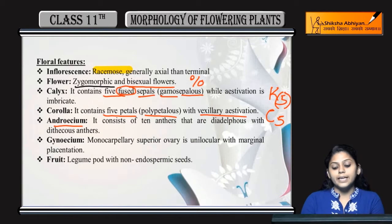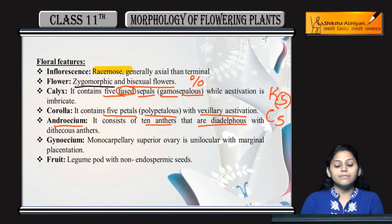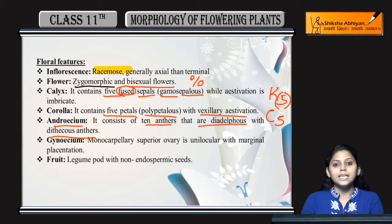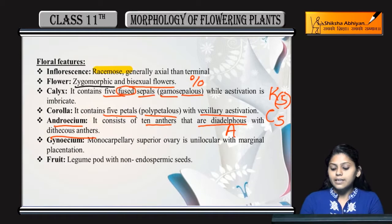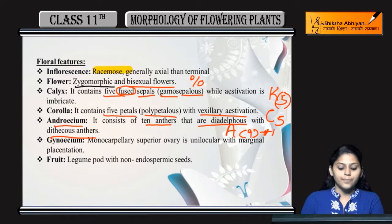Androecium: ten anthers are present, that are diadelphous with dithecous anthers. This is denoted by A. They are diadelphous and dithecous anthers are present.